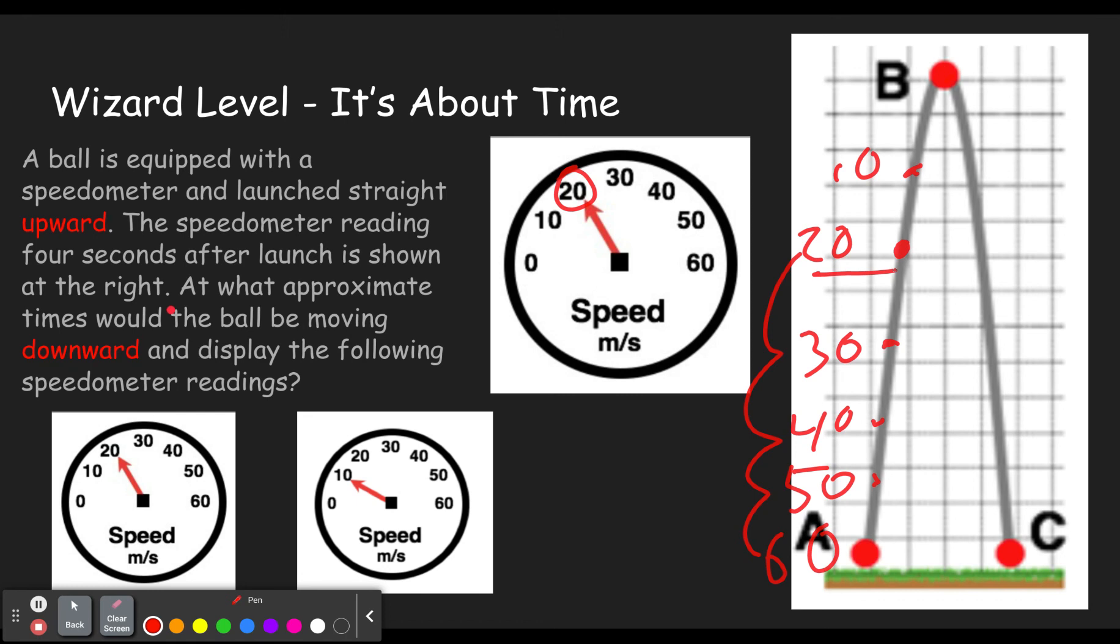So then the question is at what approximate times would the ball be moving? And then pay close attention to this word because sometimes it'll be upward, sometimes it'll be downward. Will the ball be moving downward and display the following readings? So when's it going to be going downward and reading 20? Well, there's 20 and that'll be one, two, three, four, five, six, seven, eight seconds after it was launched.